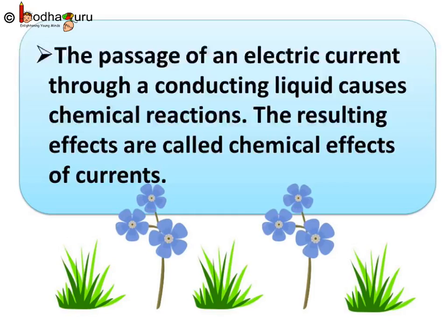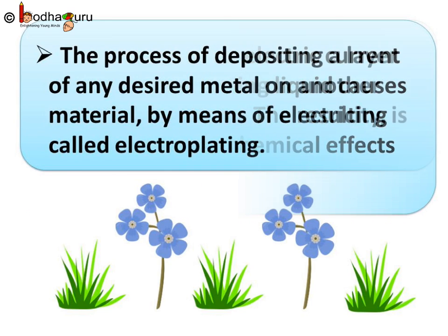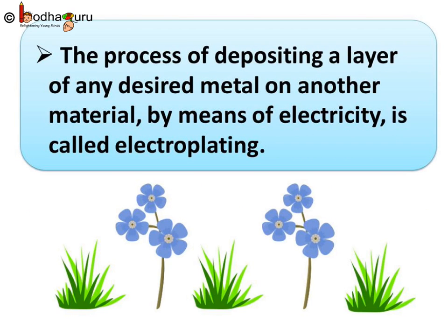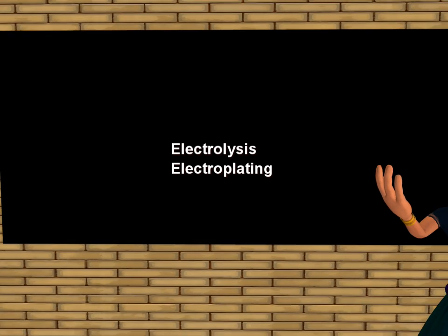So, to sum up what we learnt today: the passage of an electric current through a conducting liquid causes chemical reactions. The resulting effects are called chemical effects of currents. The process of depositing a layer of any desired metal on another material by means of electricity is called electroplating. That's all for now. Bye-bye!